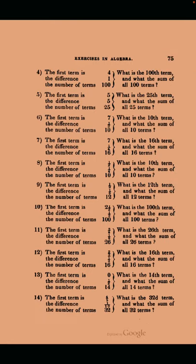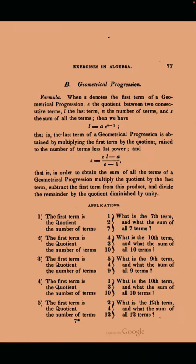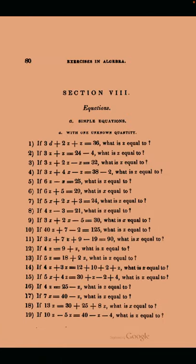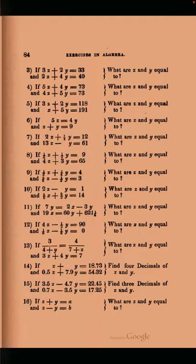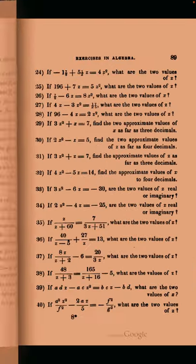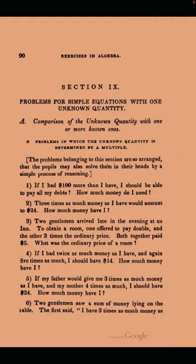I hate this typesetting — it's confusing. The first term is 4, the difference is 1, the number of terms is 100. He's trying to make it systematic, but still. Geometrical progressions, the same thing. Lots of curly braces — that's what we're seeing.